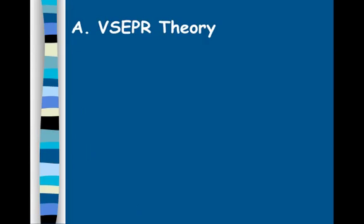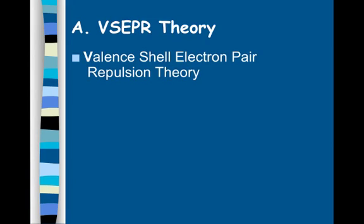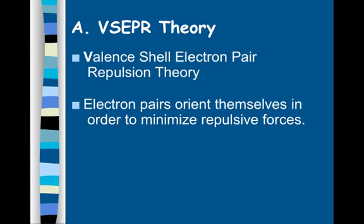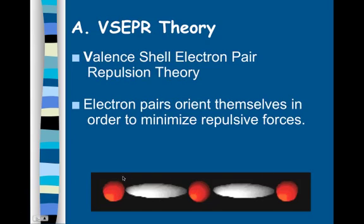Let's talk about the VSEPR theory, or the valence shell electron pair repulsion theory. That is a big, scary acronym, but it's very simple. All you're doing is looking at electron pairs, whether they be bonding pairs or lone pairs. Electron pairs orient themselves in order to minimize repulsive forces — they're going to be as far away from each other as possible. For example, if you just have three atoms and no extra lone pairs, they're going to be as far away from each other as possible.